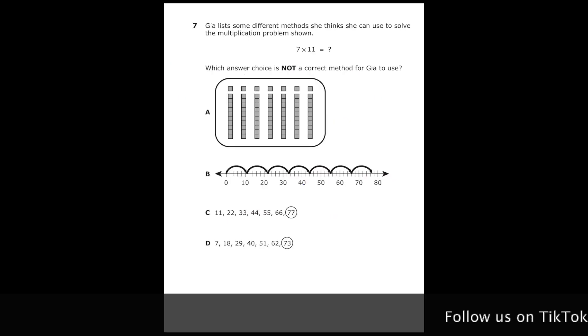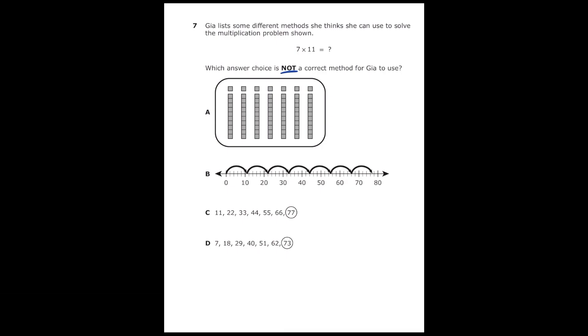This is number seven from the 2022 third grade math STAR test. Gia lists some different methods she thinks she can use to solve the multiplication problem shown. Which answer choice is not a correct method for Gia to use? So we're trying to do seven times 11, so let's go ahead and go through each answer choice and see which one is correct.